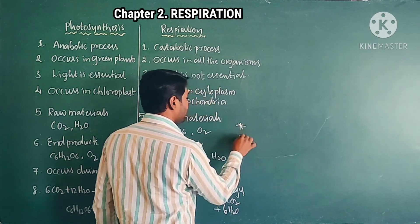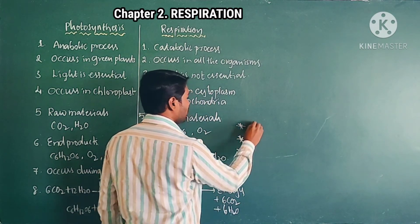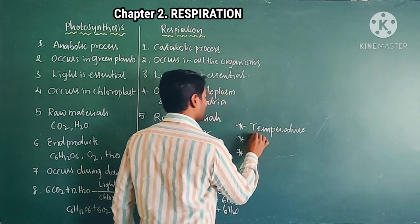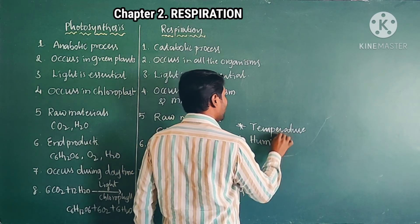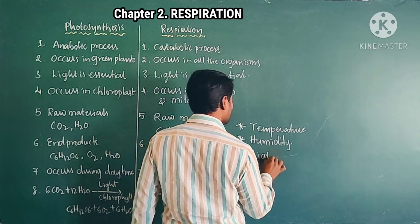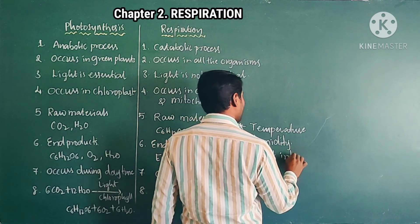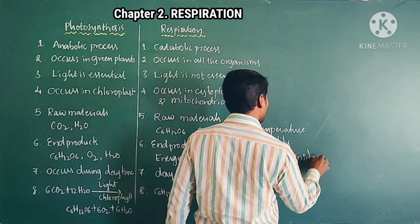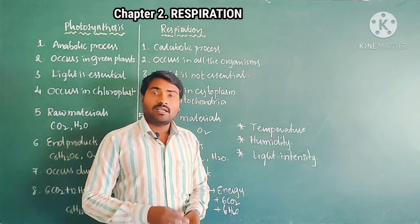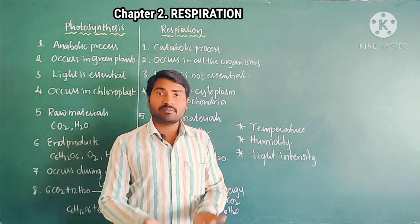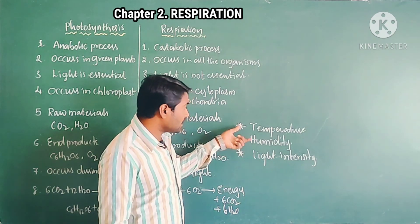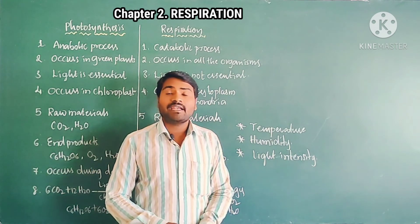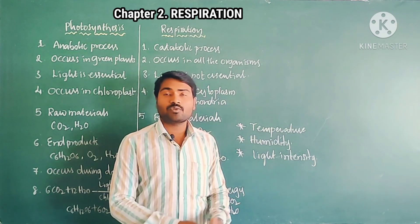The factors which affect the rate of respiration and photosynthesis are: temperature, humidity, and light intensity. These factors affect the rate of both respiration and photosynthesis.